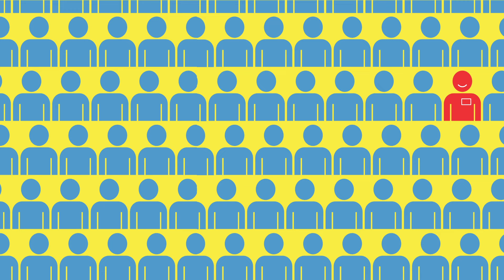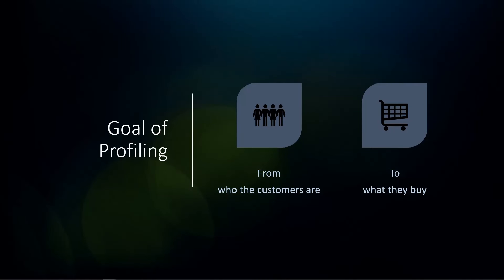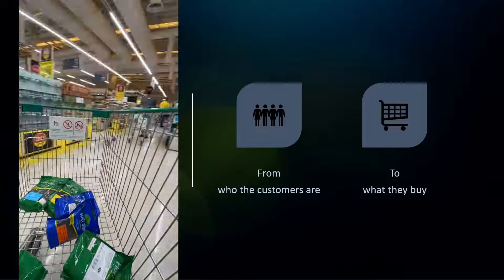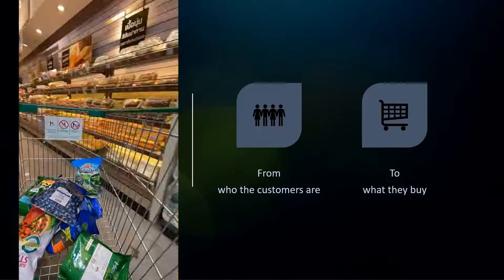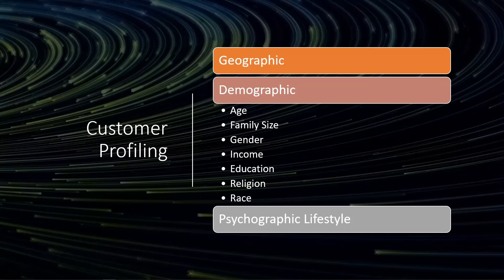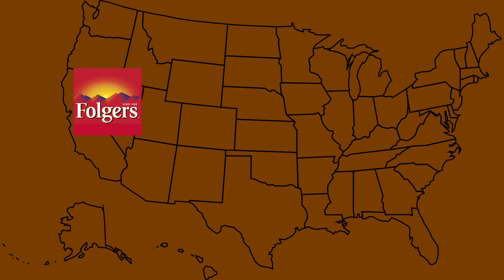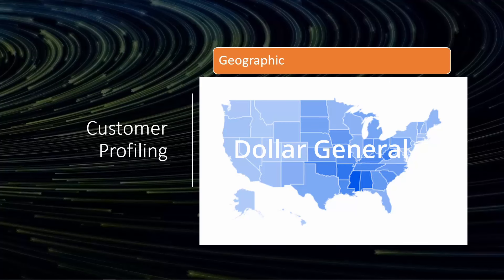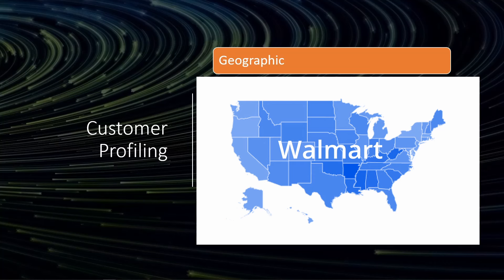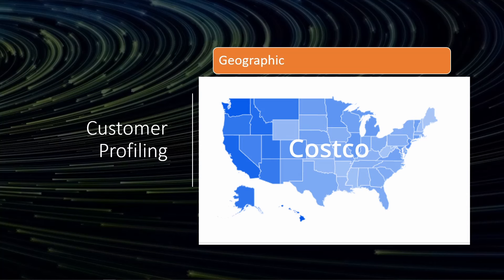So the goal of profiling is by summarizing who the customers are, we're trying to associate that with what they buy or how much they buy. Here are a few commonly used dimensions for customer profiling. First, geographic — people in different geographic regions very often have different preferences for products and services. For example, consumers on the west coast and the east coast have slightly different preferences for coffee brands. And as we showed with Dollar General, the popularity of different retailers may differ across geographic regions as well.